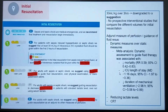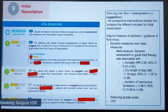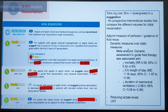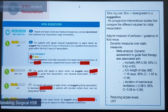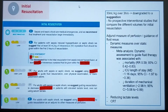Regarding measuring the adequacy of fluid resuscitation, the 2021 guidelines recommend the use of dynamic measures to guide fluid resuscitation over physical examination or static parameters. Meta-analysis demonstrated that dynamic assessment to guide fluid therapy is associated with reduced mortality, reduced ICU length of stay, and reduced requirement for mechanical ventilation. Other measures recommended include reducing lactate levels and using capillary refill time to guide resuscitation at a minimum. However, the guidelines did not specify target lactate levels.